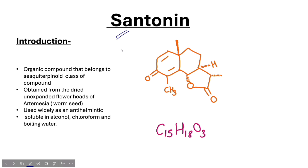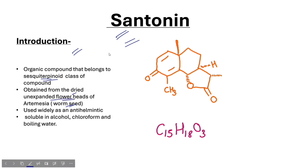First of all, our point is introduction. After the introduction, you will know what Santonin's compound is. Santonin is an organic compound. This is called a Sesquiterpenoid compound. We find it from worm seeds. We find it in Artemisia dried unexpanded flower head. This is where we obtain it.